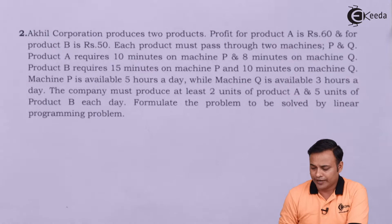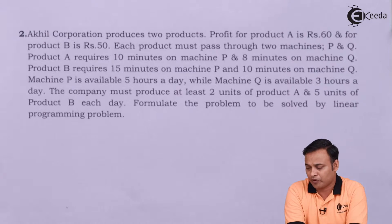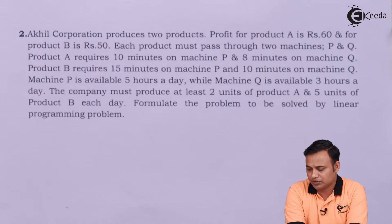Problem number 2: Akhil Corporation produces 2 products. Profit for product A is 60 rupees and for product B is 50 rupees. So they are given us the profit per unit.